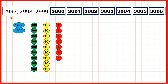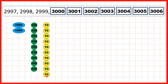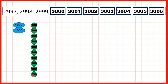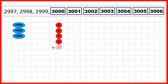We could also show place value counters. So again, starting with 2997. If we add ones, we get to 3000, because if we've got 10 ones, we exchange those for one 10. Doing that means that we have 10 tens, and we can exchange those for 100. And then, because we've now got 10 hundreds, we can exchange those for one extra thousand, giving us 3000 altogether. And then we can keep on adding ones until we get to 3006.